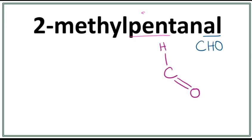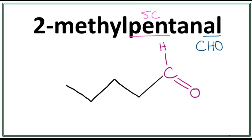The 'pent' here means that this has 5 carbons in the longest carbon chain. A trick to draw this is that you always count till 1 less than the number of carbons you want to draw. So 1, 2, 3, 4.